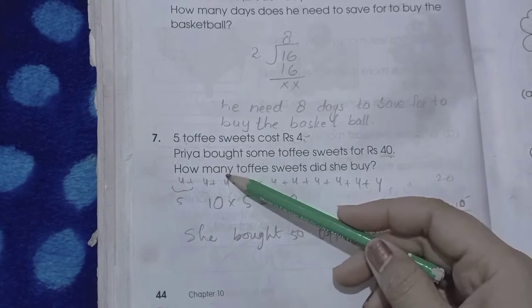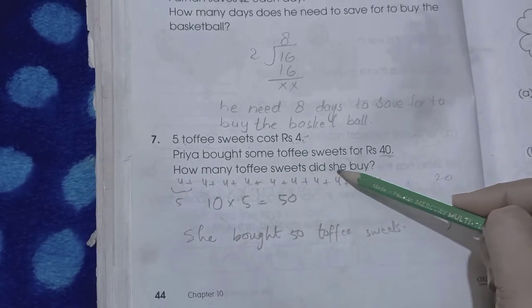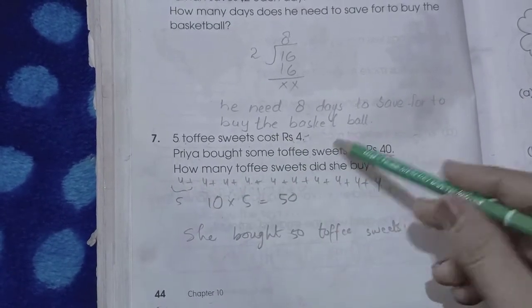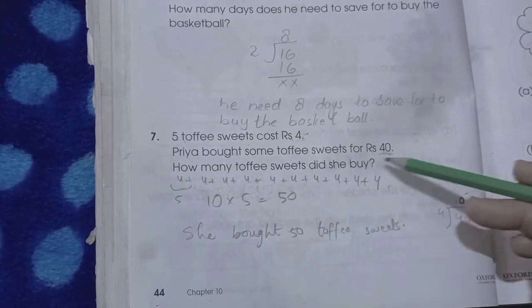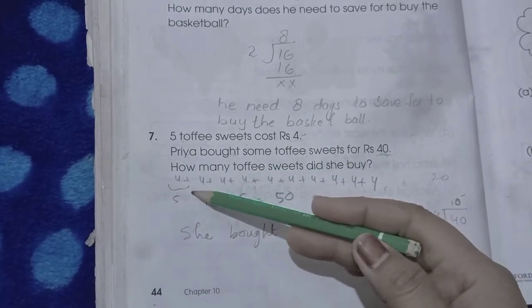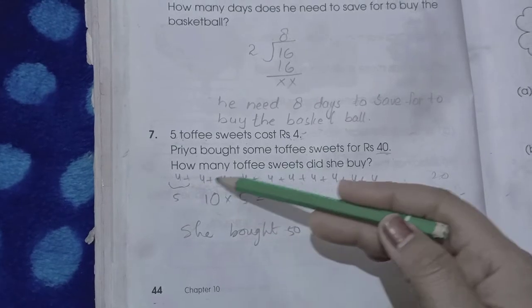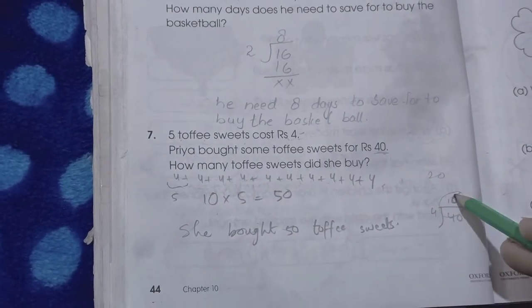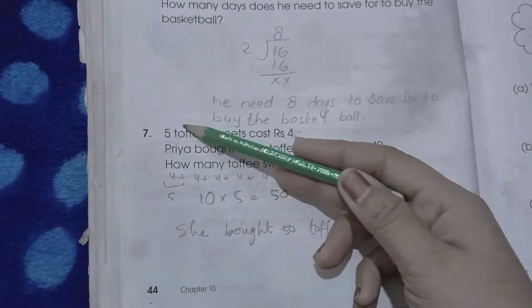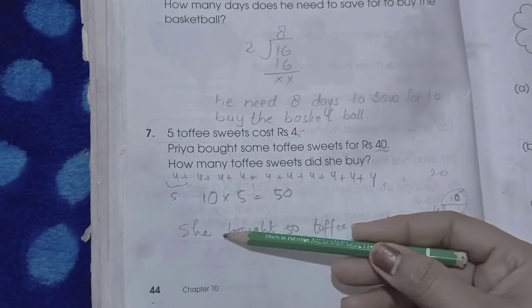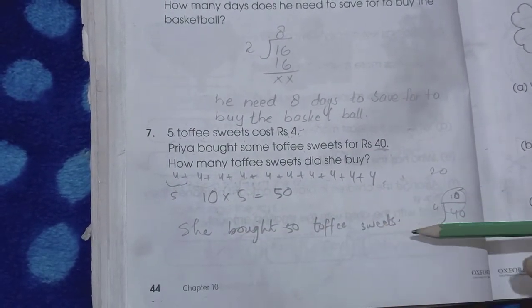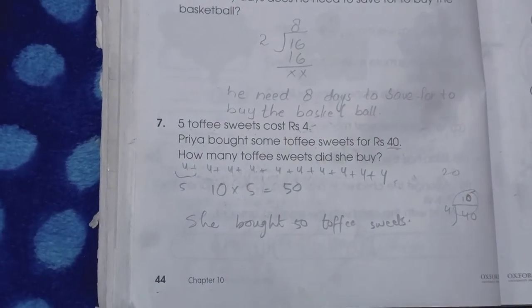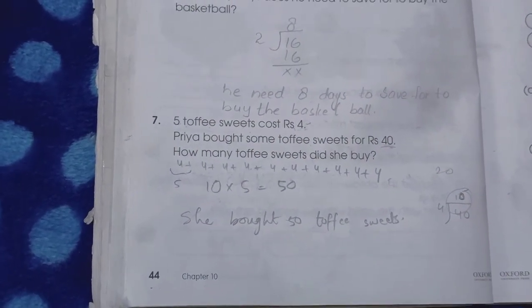Here we have: 5 toffee sweets cost 4 rupees. Priya bought some toffee sweets for 40 rupees. How many toffee sweets did she buy? First we write 4 to complete 40. When we add 4 ten times, it becomes 40. Four tens are 40. Now we multiply this 10 with 5. Ten fives are 50. She bought 50 toffee sweets. So this is the complete explanation of your chapter.